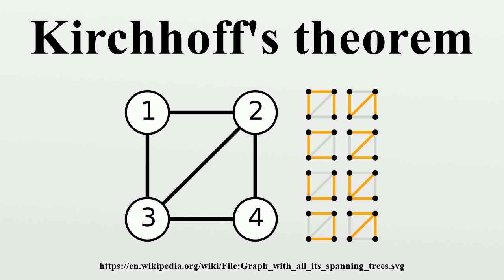An example using the matrix tree theorem: First, construct the Laplacian matrix Q for the example kite graph G. Next, construct a matrix Q* by deleting any row and any column from Q. For example, deleting row 1 and column 1 yields a submatrix. Finally, take the determinant of Q* to obtain T, which is 8 for the kite graph. This is the cofactor of Q in this example.